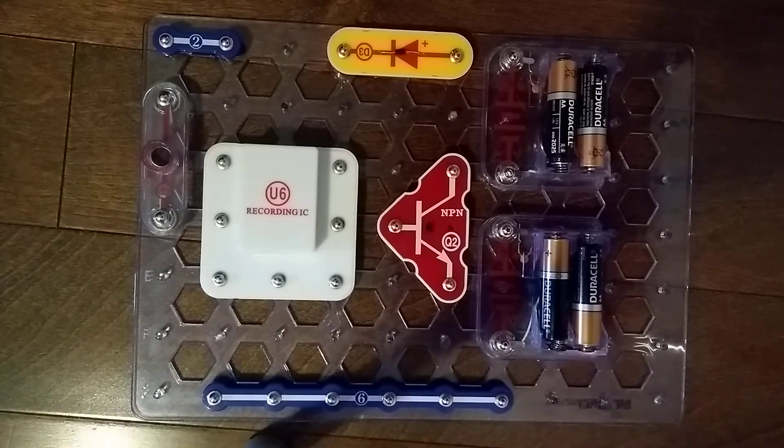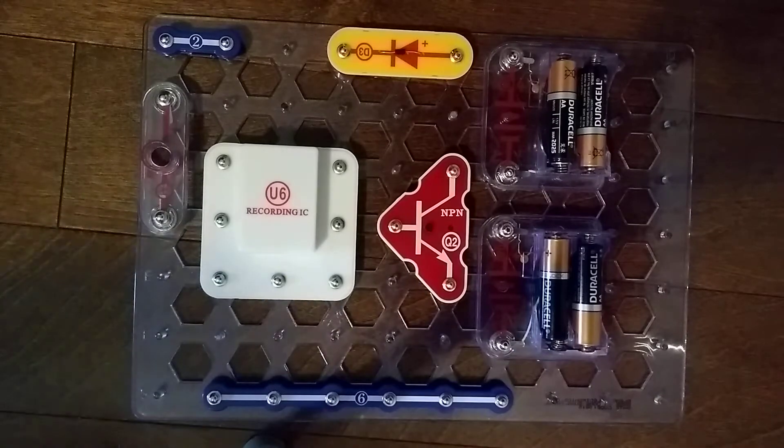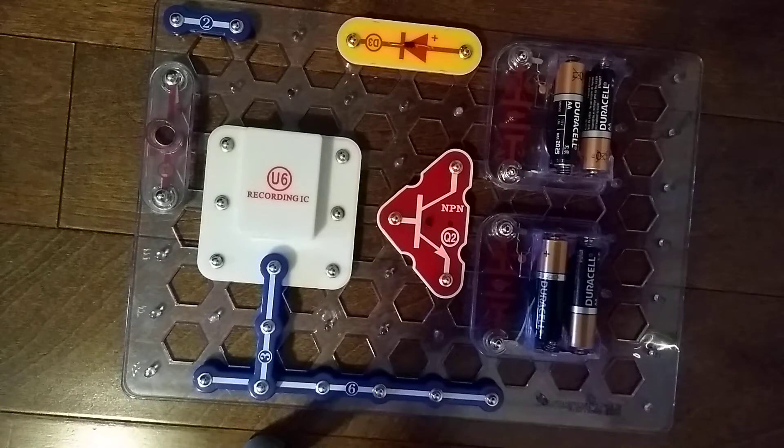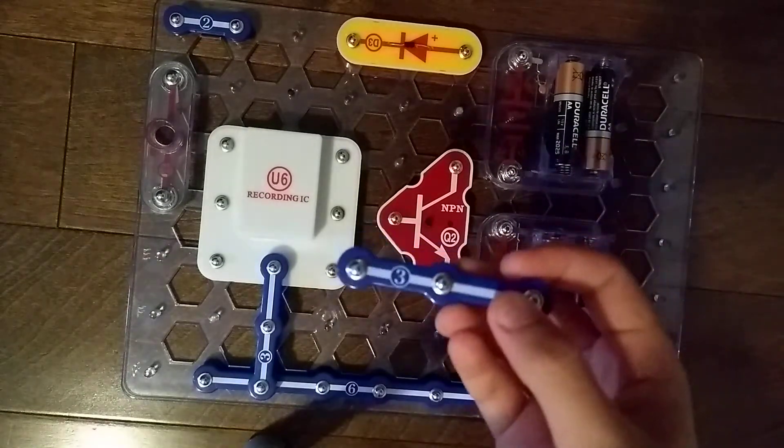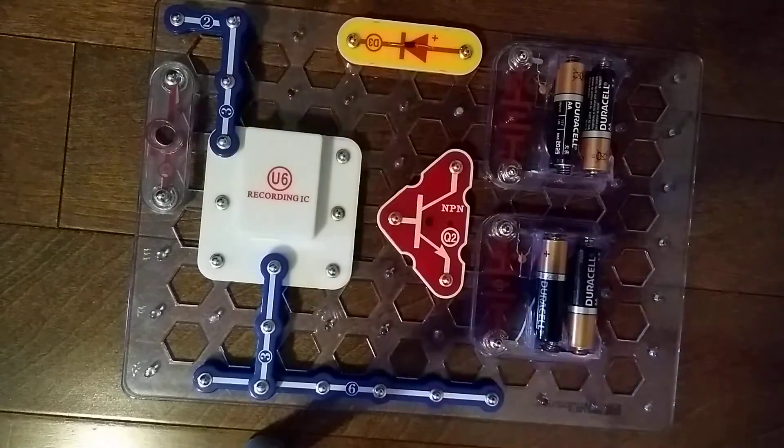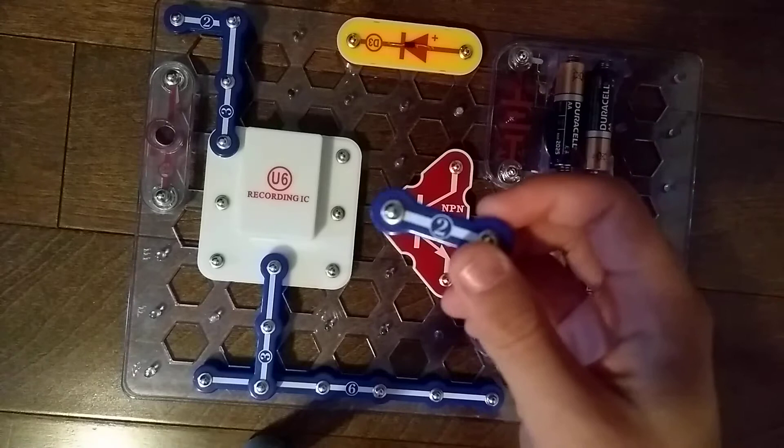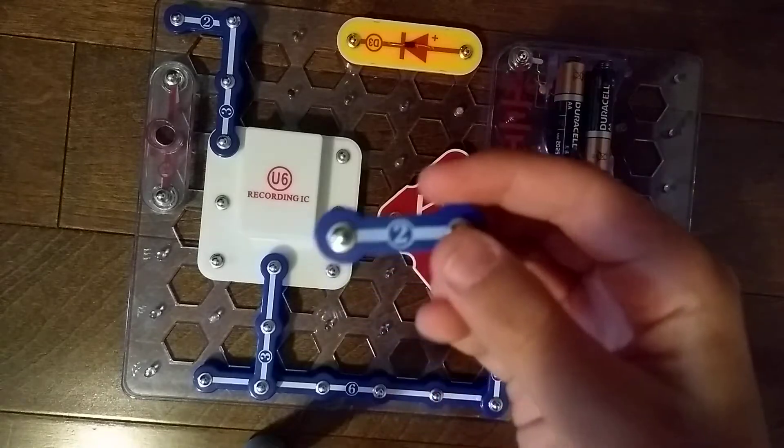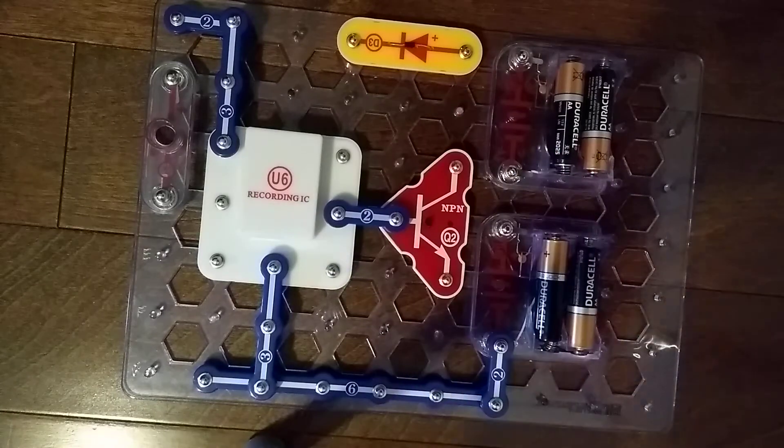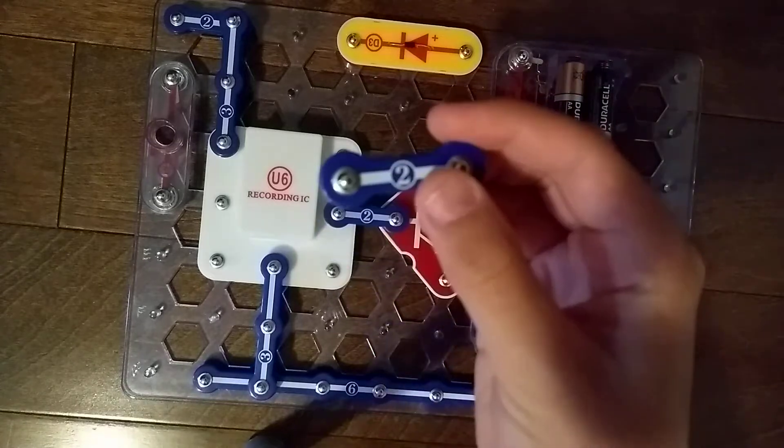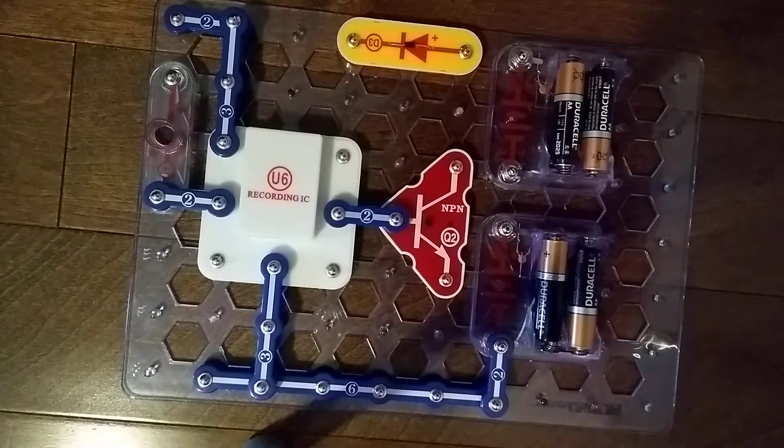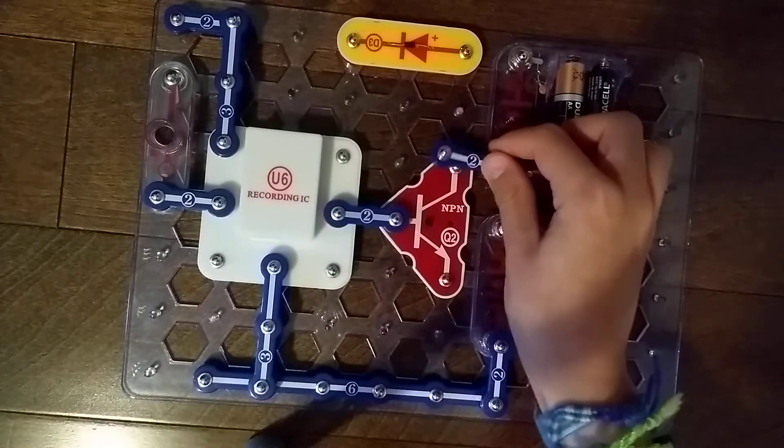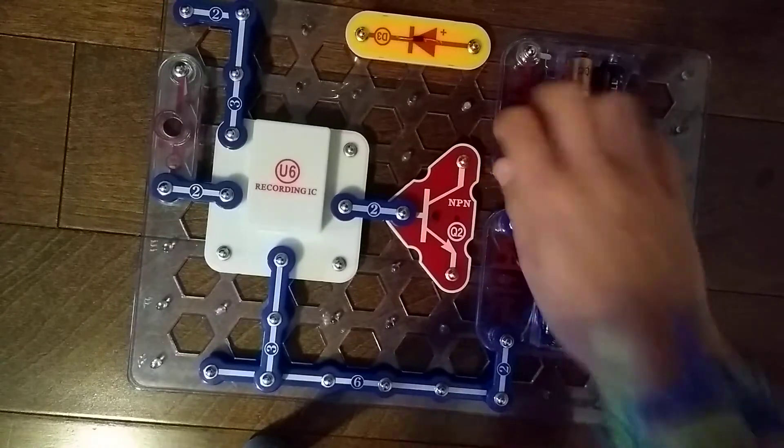So, it's time to do layer 2. So, let's put a 3-snap wire right here. Another 3-snap wire up here. Next, we need a 2-snap wire right here. And then another 2-snap wire right here. And then a 2-snap wire here. And then a 2-snap wire right here.